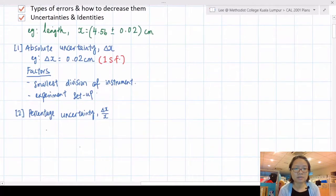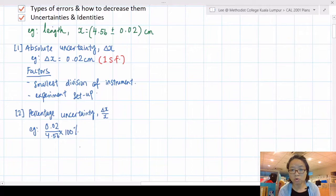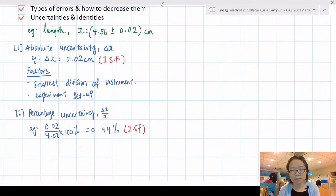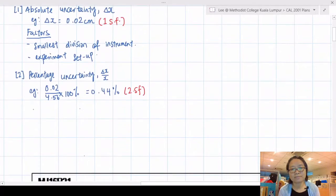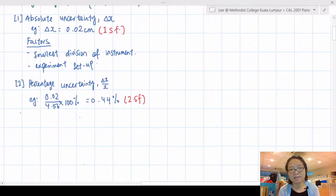Second thing is percentage uncertainty which is Δx over x. Based on my example, I'll take 0.02 over 4.56, same unit, no need to convert. When you write absolute uncertainty 1 SF, when you write percentage uncertainty you should write your answers in 2 SF. If you don't follow the SF highly likely you will lose marks. This will be 0.44 percent.